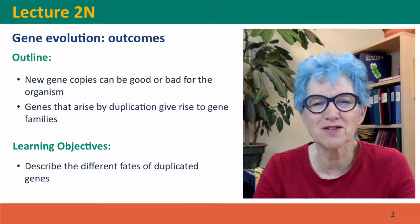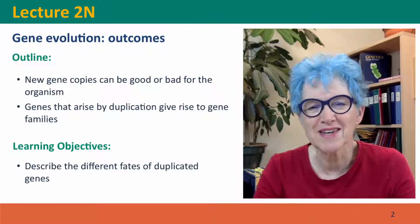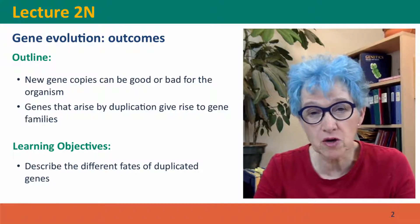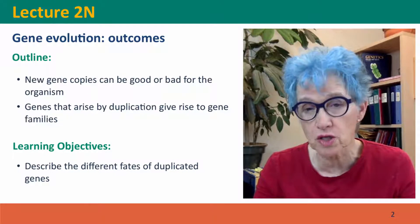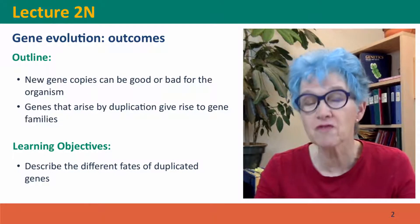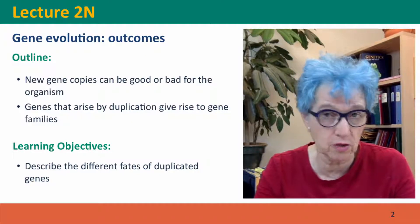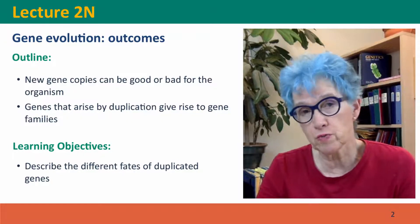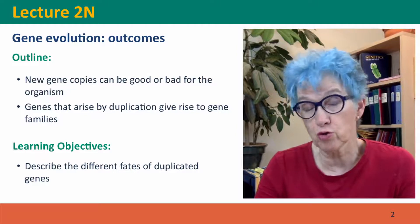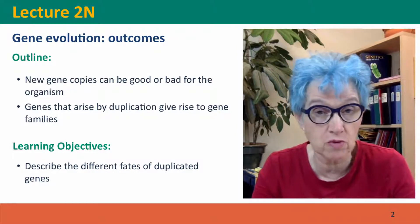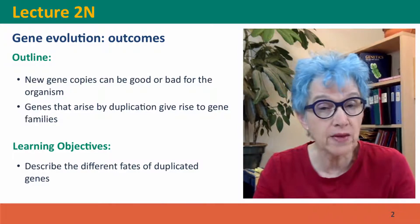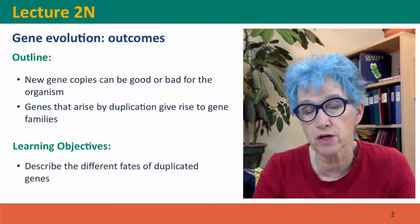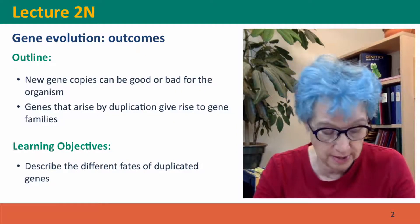Hi everyone, welcome back to Useful Genetics. This is lecture 2N, where we're going to talk about the outcomes and consequences of the gene duplications that we discussed in the previous lecture. We'll talk about whether gene duplications are good or bad for the organism in which they arise, and then we'll think about the longer-term evolutionary consequences of these events.